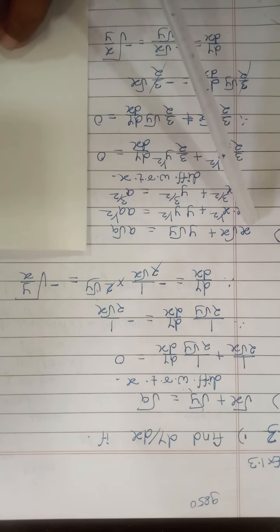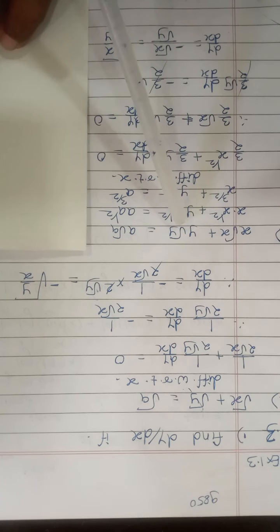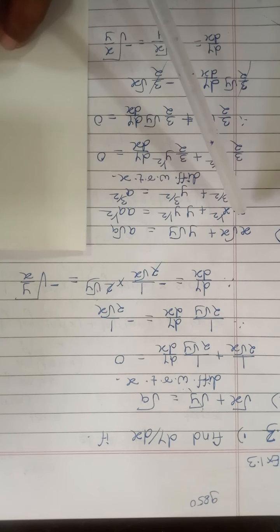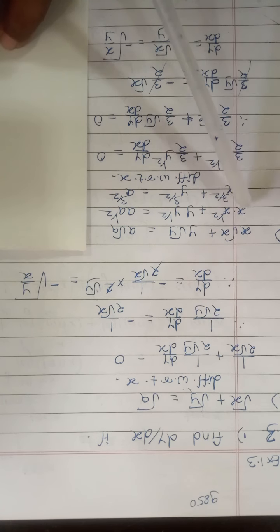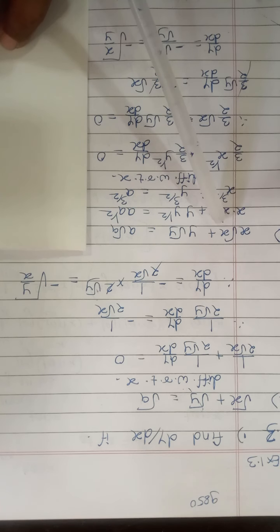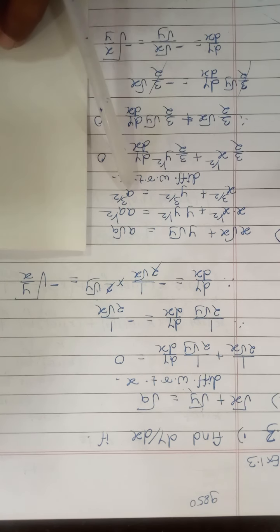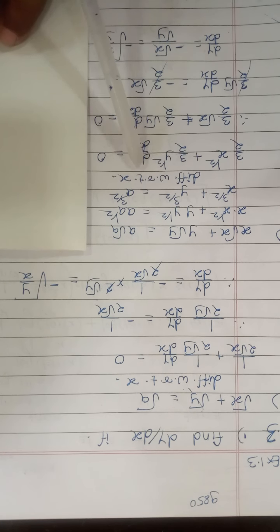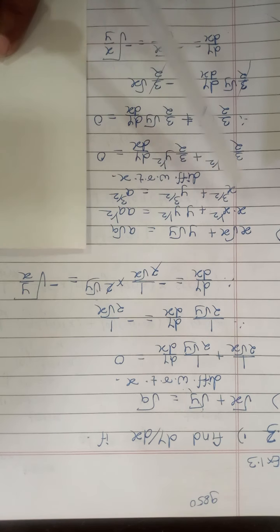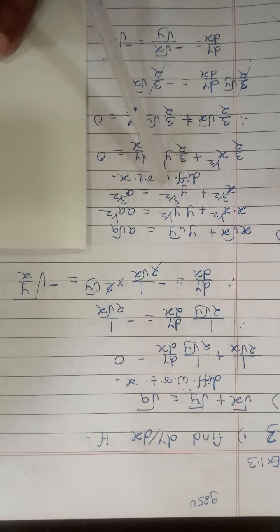Next example: x√x + y√y = a√a. Here √x is x raised to 1/2, so x·x^(1/2) means adding powers with the same base: 1 + 1/2 = 3/2. So the equation becomes x^(3/2) + y^(3/2) = a^(3/2). Now differentiating with respect to x using the formula d/dx(x^n) = n·x^(n−1), we get (3/2)·x^(1/2) from the first term.